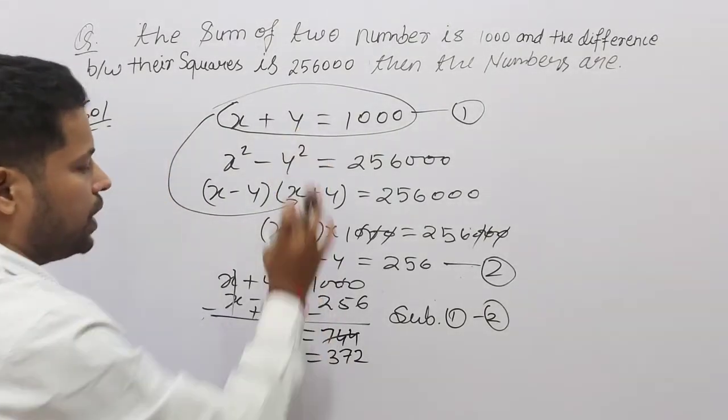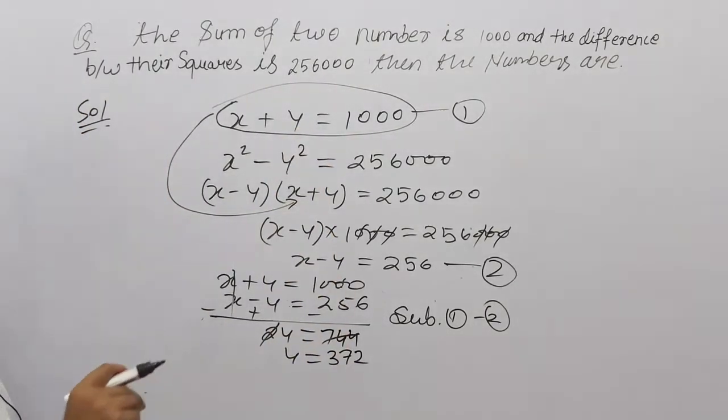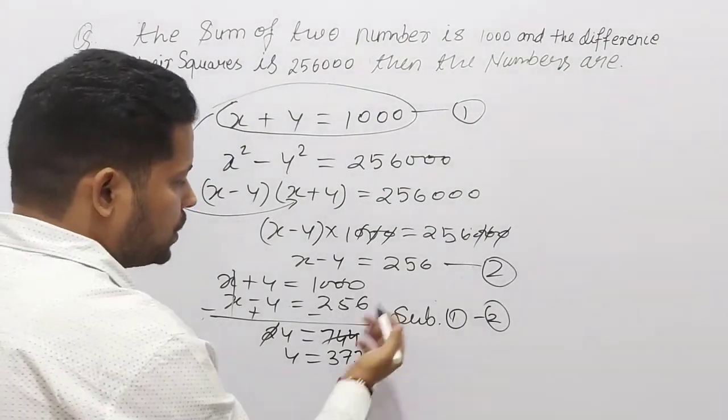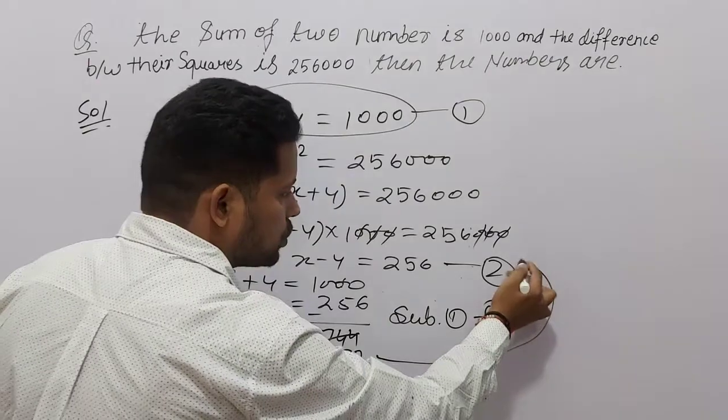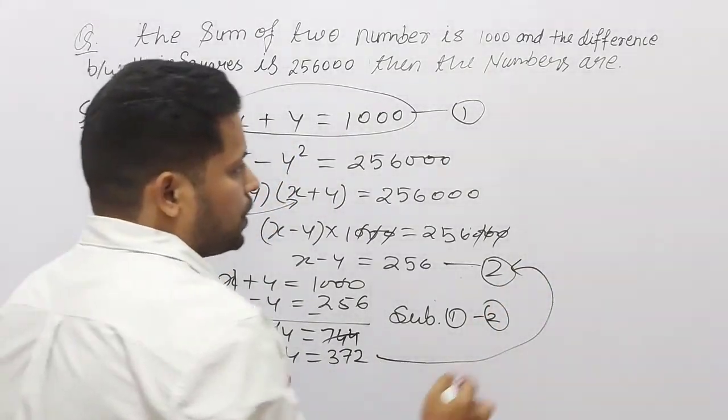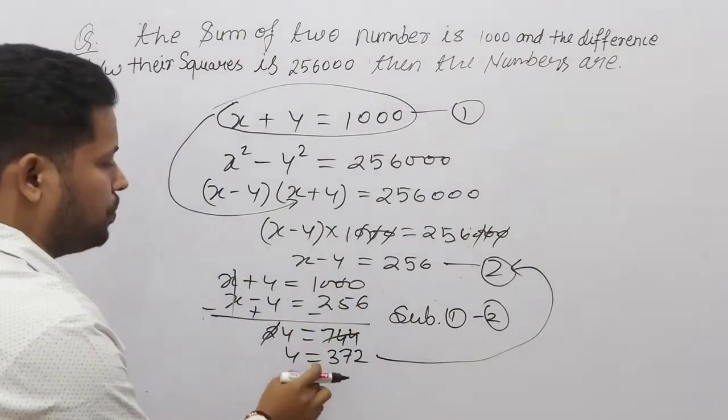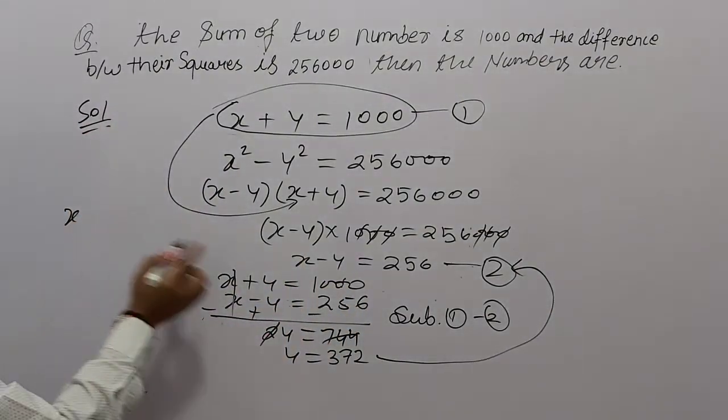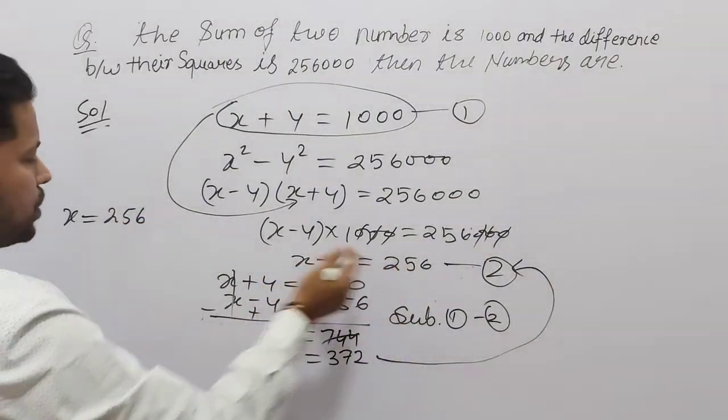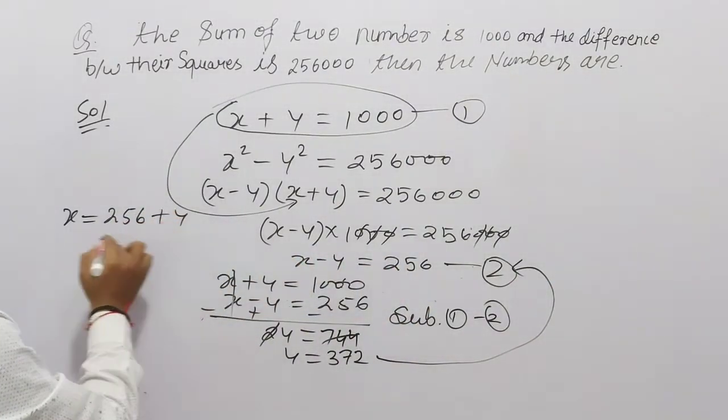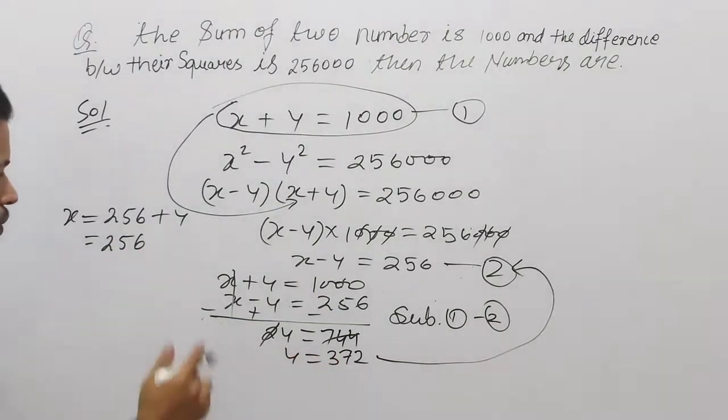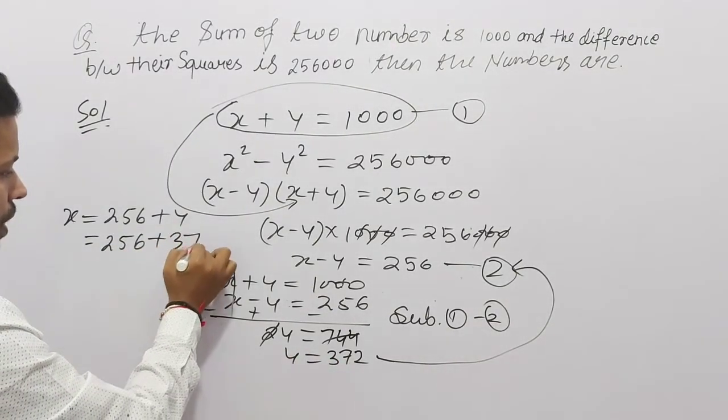हमारा second number तो निकल गया. अभी first number हम देखते हैं क्या होगा? So, y अगर हमारा 3, 7, 2 है. So, इसे हम किसी में भी put कर सकते हैं. Suppose करो कि मैंने इसे second में put कर लिया. Okay? So, x हो जाएगा यहां से. x equal to 256 and यह y उदर गया तो plus y. And 256 और y की value हमने 3, 7, 2 निकाला है. 3, 7 and 2.